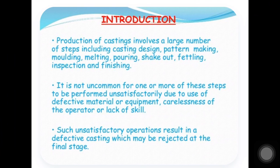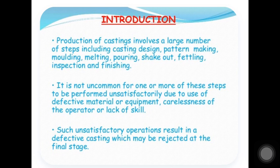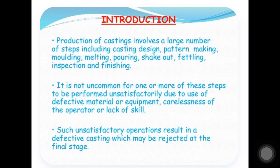A production of casting involves large steps including: casting design, pattern making, molding, melting, pouring, shake out, fettling, inspections and finishing — these are the steps of the casting process. It is not uncommon for one or more of these steps to be performed unsatisfactorily due to the use of defective materials or equipment.